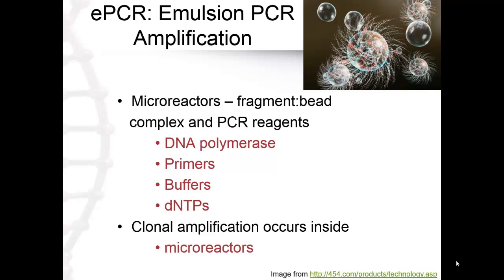Microreactors are the fragment bead complexes and the PCR reagents in the emulsion micelles, or droplets. Each of these microreactors is ready to start amplifying the sequence. Primers are used as a starting point for DNA synthesis. DNA polymerase, the enzyme, is then used to add the nucleotides, or the dNTPs. Buffers set the pH level at an optimum level for enzymatic activity and keep it at that level.